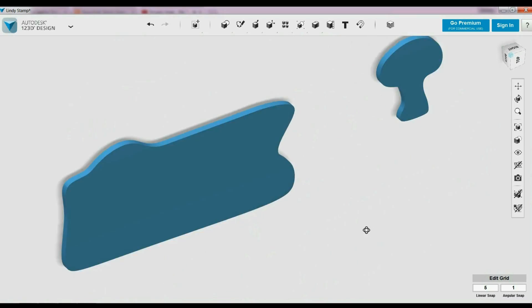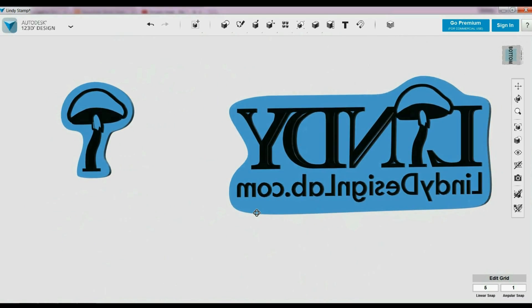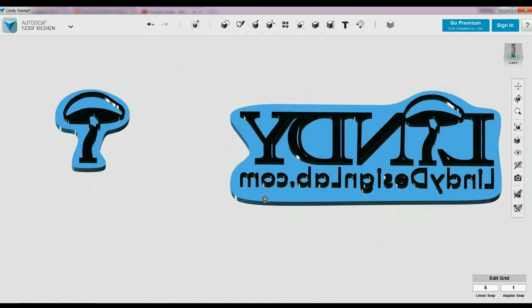I've got a fun little project for you today, making custom rubber stamps on your 3D printer with some NinjaFlex filament.